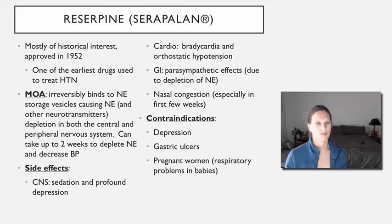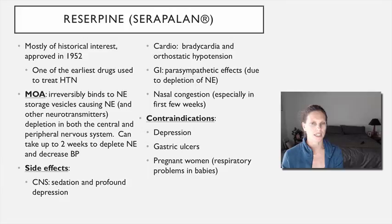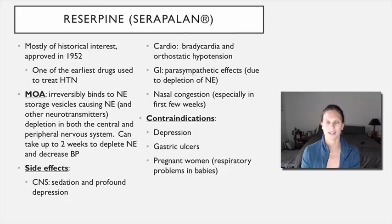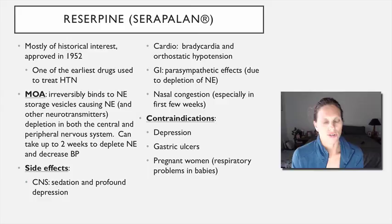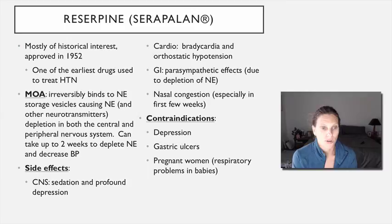Reserpine, approved in 1952, is one of the first drugs used to treat hypertension. It irreversibly binds to norepinephrine storage vesicles, causing norepinephrine to be depleted both centrally and peripherally over time — a process that can take a couple of weeks. By depleting norepinephrine, you see decreased sympathetic stimulation at beta-1 receptors and potentially alpha receptors as well. This is a centrally acting drug and a central nervous system depressant.